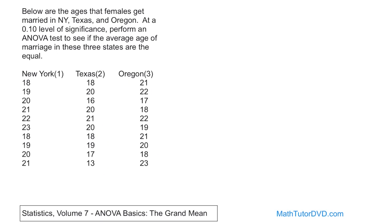This is another example where the population we're studying is the entire New York female population — the age they get married. The population here is all females in Texas, and the population here is all females in Oregon. But we can't sample everybody because there's not enough money or time. What we want to do is perform an analysis of variance test to see if the average age of marriage in these three states are equal.